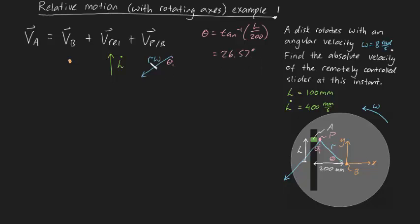Okay, so that's theta sorted. Now let's talk about R. R is this distance just here, and we can find that from Pythagoras. We know that R is going to be equal to the square root of L squared plus 200. L squared plus 200 squared. And if you plug that into your calculator, you're going to get 223.6 millimeters like that.